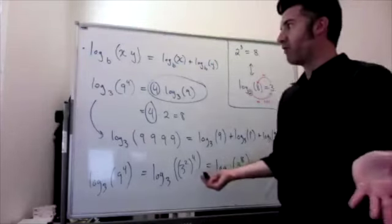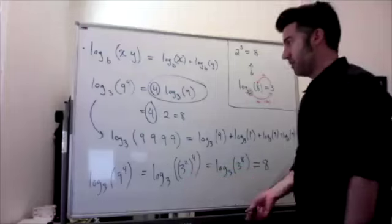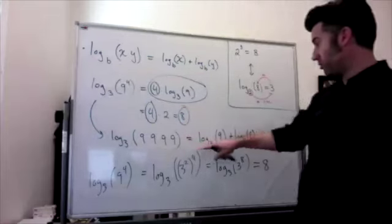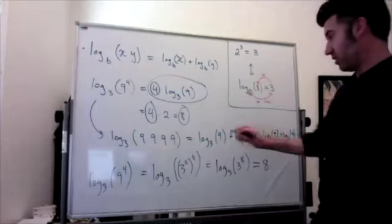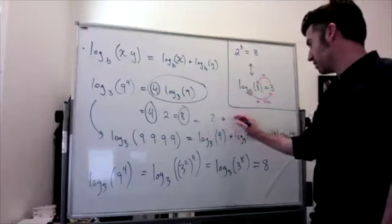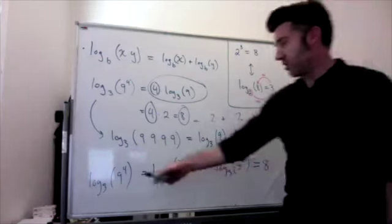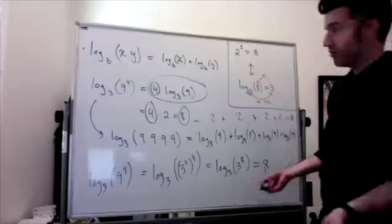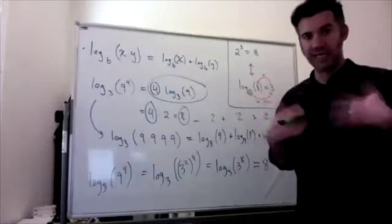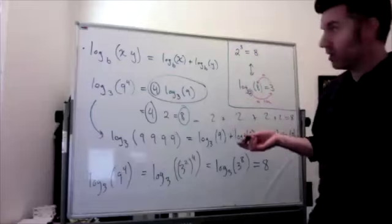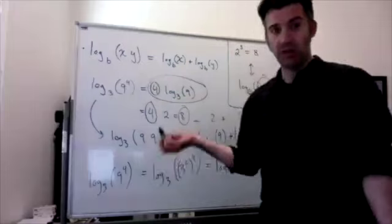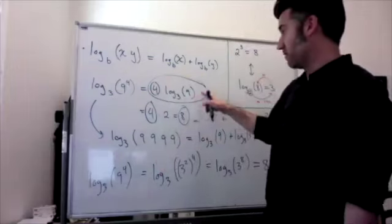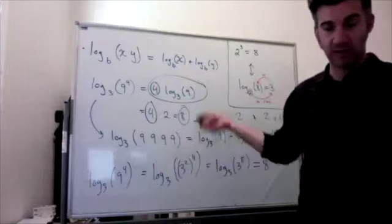Our overall answer is eight regardless of method: using the power rule gives four times two equals eight; using the product rule four times gives two plus two plus two plus two equals eight; rewriting gives log base three of three to the eighth equals eight. The easiest approach is the power rule — bring the exponent down and multiply.